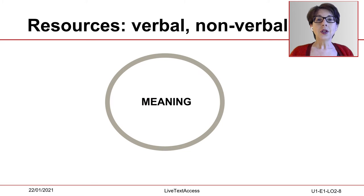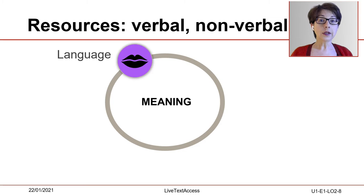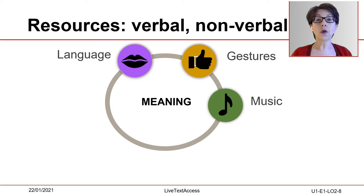Social linguists and semiotic scholars such as Halliday, Kress, or Van Leeuwen explain that there are many different types of resources within a culture. These resources can be verbal, such as language, or non-verbal, such as gestures, images, sounds, or objects.